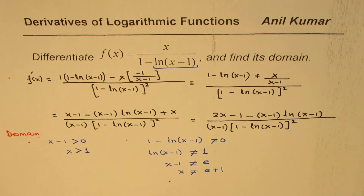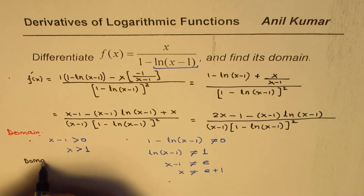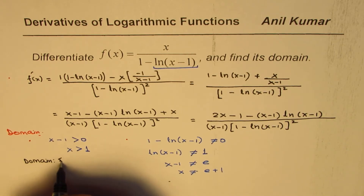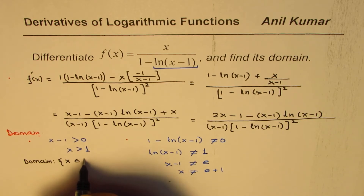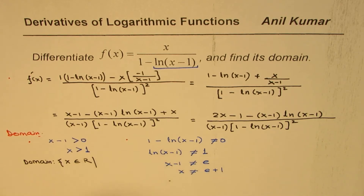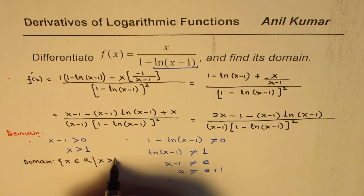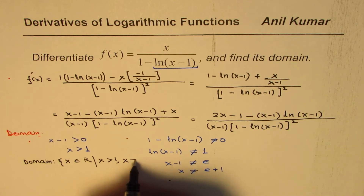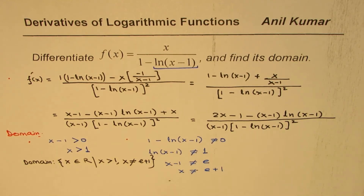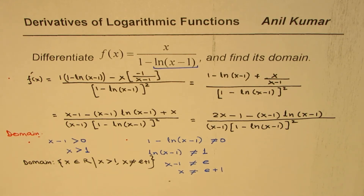Combining these restrictions, we can write down the domain. The domain is: x belongs to real numbers such that x is greater than 1, and x is not equal to e plus 1. That becomes the domain for the given question. That is how you can differentiate this function and also find its domain.